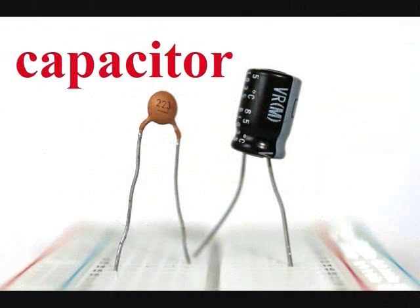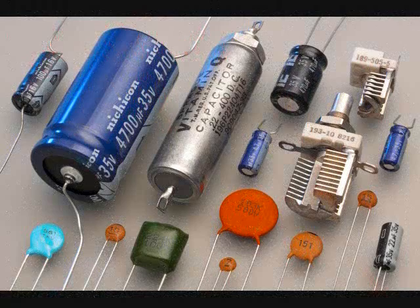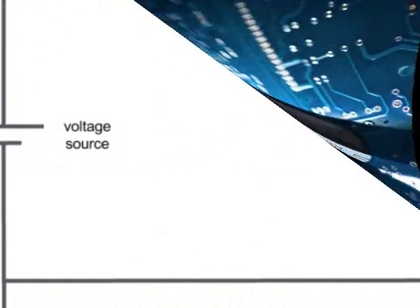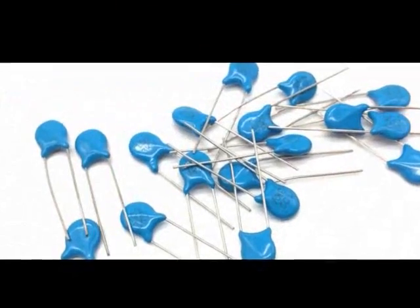Capacitor. A capacitor is an electrical device with two terminals that can store energy in the form of an electrical charge. It consists of two electrical conductors that are separated from each other by a distance. The space between the conductors may be filled with a vacuum or with an insulating material called a dielectric.